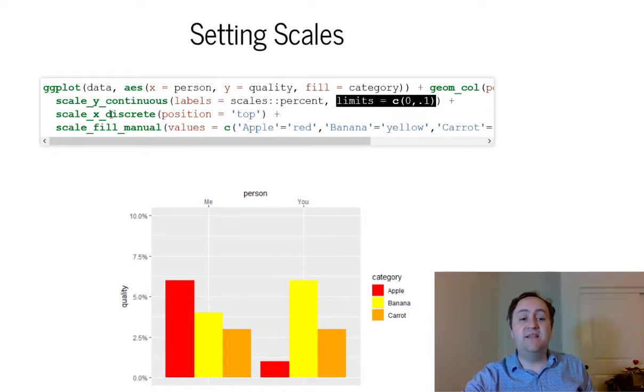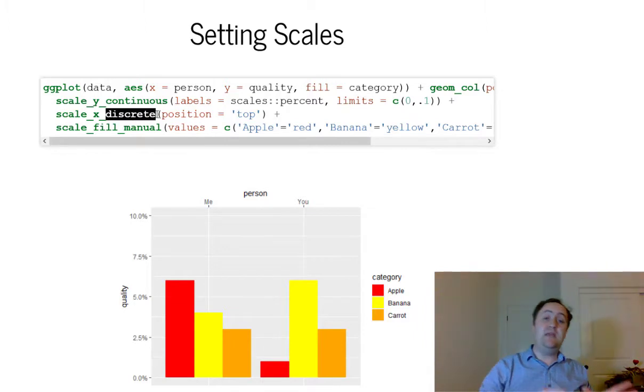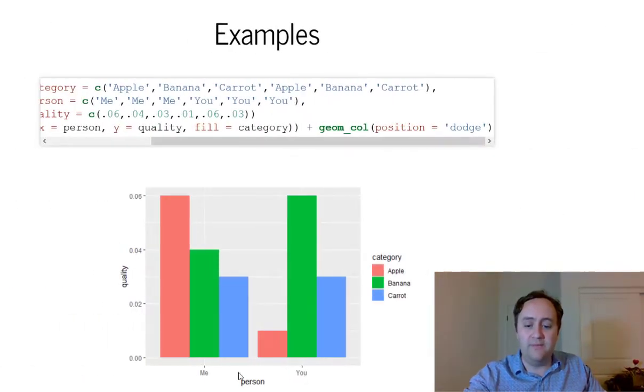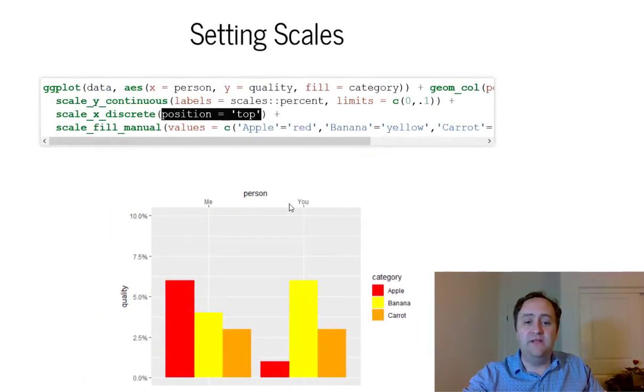Next, I'm going to do my x-axis. This is a discrete variable. It's either me or you. Those are discrete values. There's not really a more or less there. It's just me and you. All that I'm going to do here is I'm going to move where that axis is shown. I'm going to put it on the top. So I'm going to say position equals top. That moves it from the bottom where it was before. Now it is on the top here.